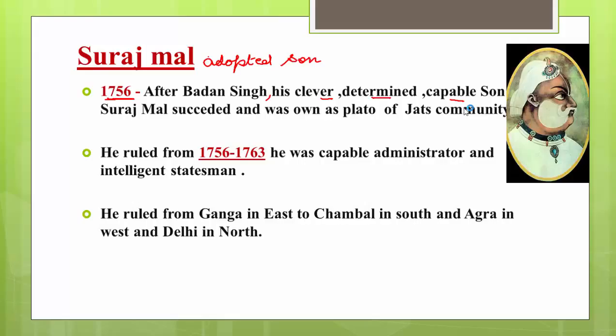According to some historians, Suraj Mal is also compared with Plato. He was known as the 'Plato of the Jat community.' Plato was a very famous philosopher in classical Greece with enormous impact on the development of western thought. Suraj Mal was such a statesman that he was compared with Plato. This can come as a general knowledge question in exams. He ruled from 1756 to 1763 and was a capable administrator and intelligent statesman.